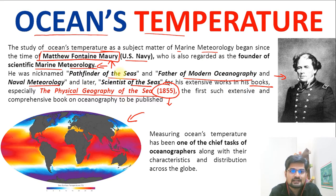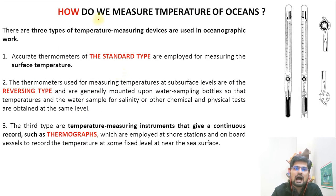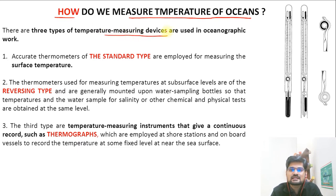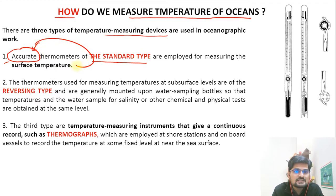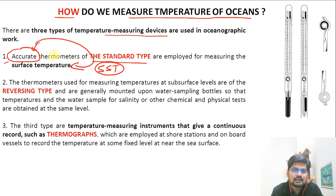So that is where the study starts. Now let's understand what ocean temperature is, what its controlling factors are, and how we measure it. There are three types of temperature measuring devices. The first is called the accurate thermometer — accuracy is about surface temperature only. So accurate or standard thermometers are used for SST, that is sea surface temperature.